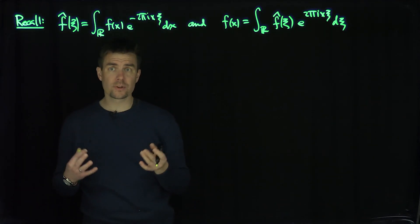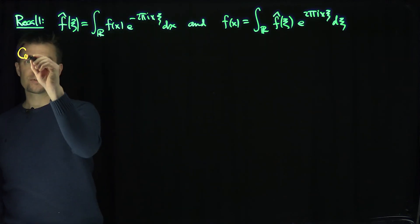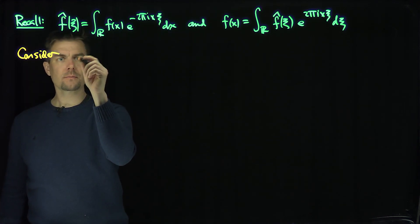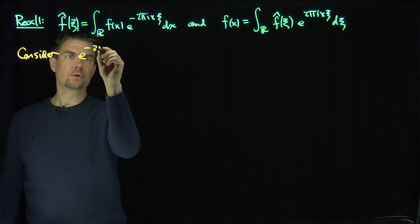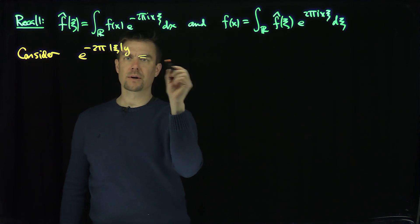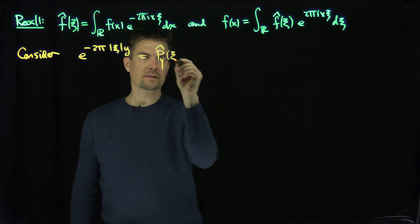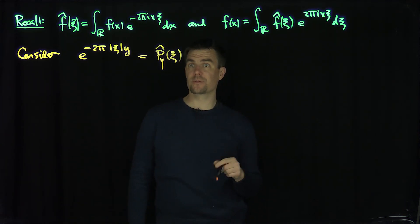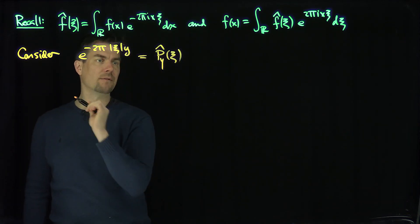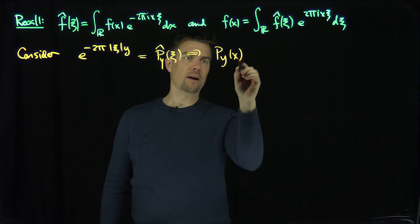In the context of solving the Laplace equation in the upper half space, we encounter functions that look like this. Consider the family of functions e^{-2π|ξ|y}. I'm going to call this p-hat of y and ξ. These are Fourier transforms of something, and I want to find out what they are Fourier transforms of. So given p-hat_y(ξ), I want to find a corresponding function p_y(x).